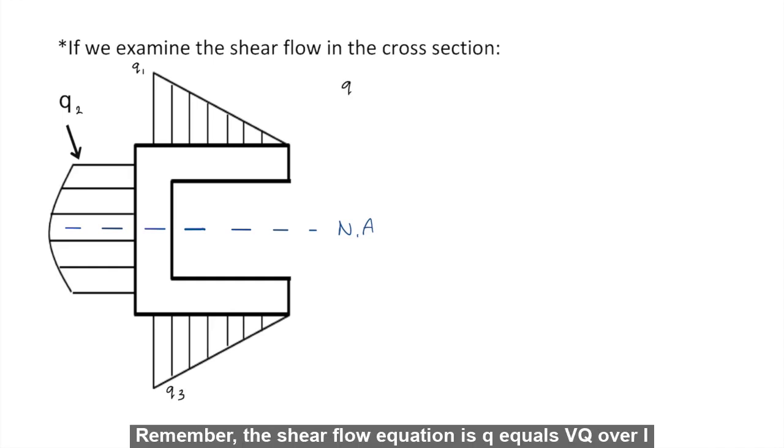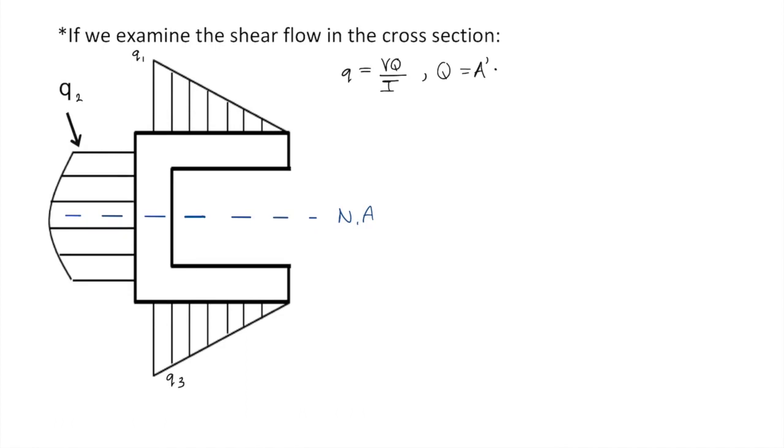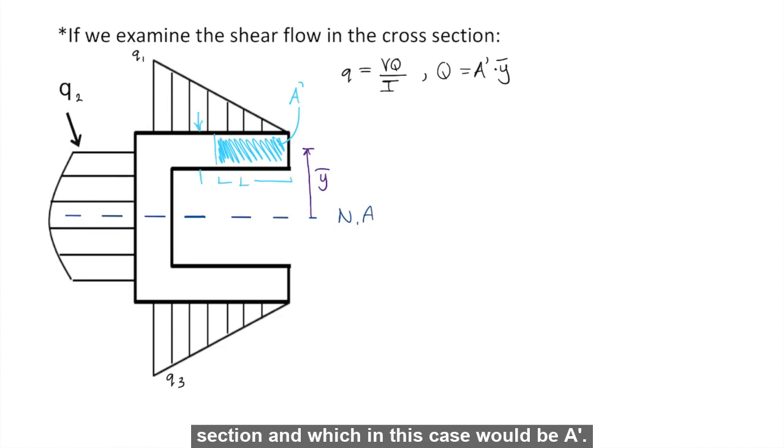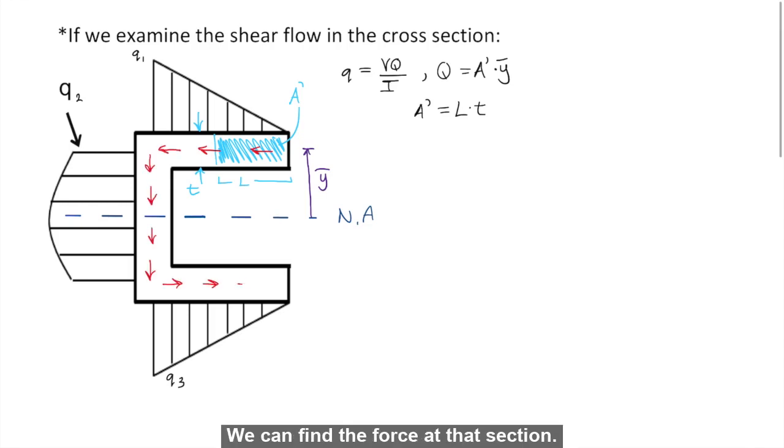Remember, the shear flow equation is q equals VQ over I, and Q is equal to A prime times y bar. Y bar is the distance from the neutral axis to the center of this section, which in this case would be A prime. When we integrate the shear flow distribution q over each piece of section, we can find the force at that section.